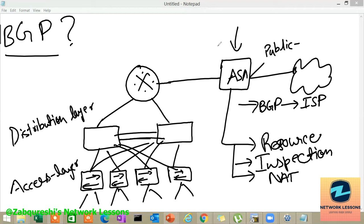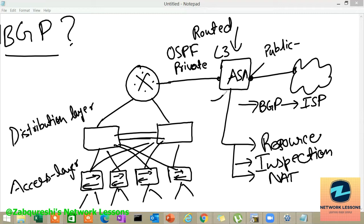In this design the ASA is in L3 mode, also called routed mode. In this case you will have a public IP on one side and a private IP on the other. You may be running OSPF between the ASA and the corporate router, and you will be distributing the BGP routes into OSPF — or actually redistributing a default route into OSPF — something like that.